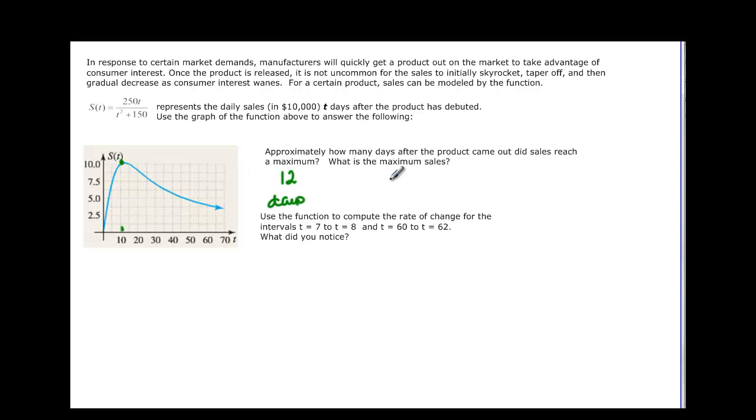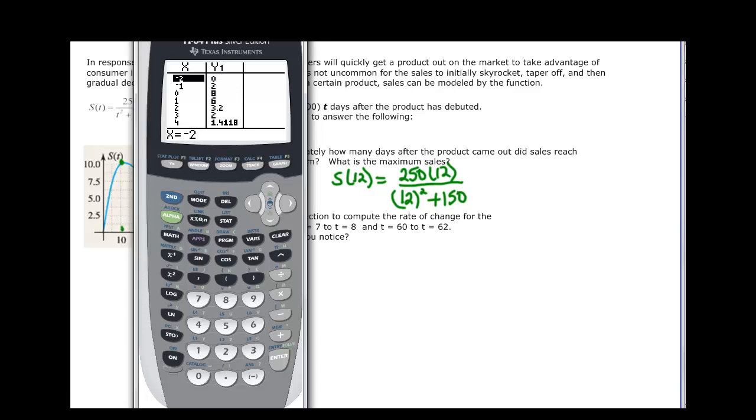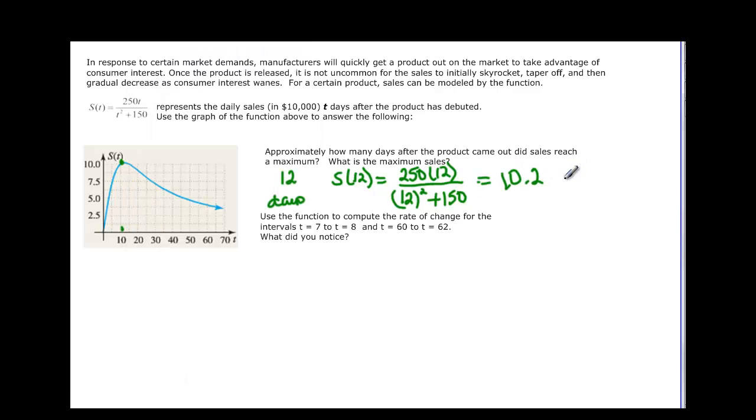12 days, and then we want to know what that maximum sale is. To do that, we go back to our sales formula. s(12) is what we're trying to find: 250 times 12, divided by 12 squared plus 150. Pull up your calculator, parentheses 250 times 12, all divided by 12 squared plus 150. Press enter and we get 10.2. But remember, this is in ten thousands, so that maximum sales would be 102,000.